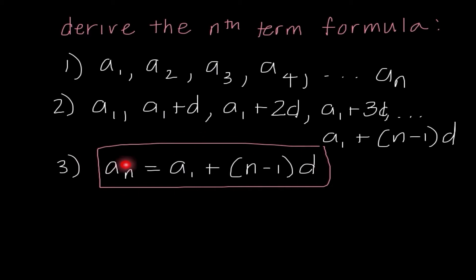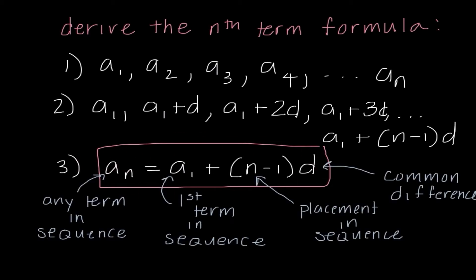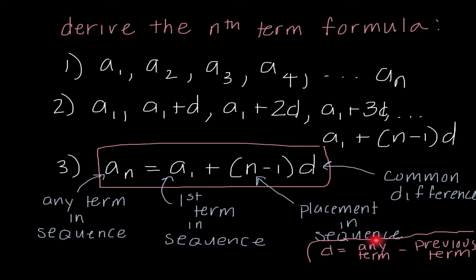Let's recap what everything in this equation stands for. aₙ is any term in the sequence — whether it's the 29th or the 5 millionth term. a₁ represents the first term. n is the placement in the sequence — if we're finding the 5th term, n equals 5. d is our common difference, found by taking any term minus the previous term. Make sure you have everything on this screen committed to memory because I will ask you on the quiz to replicate this, and we'll use this formula on every problem today.